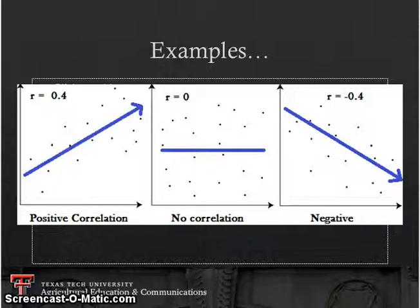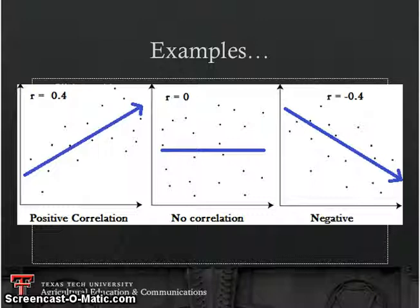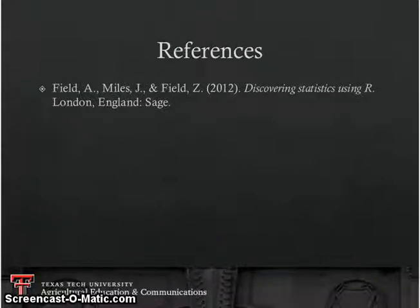A perfect correlation of 1 or negative 1 would be a straight line. There are different naming conventions used in different fields — in agriculture education, Davis (1971) is pretty popular, putting correlations into categories such as perfect, very high, substantial, moderate, low, and negligible. Here are the references for this PowerPoint presentation — thank you.